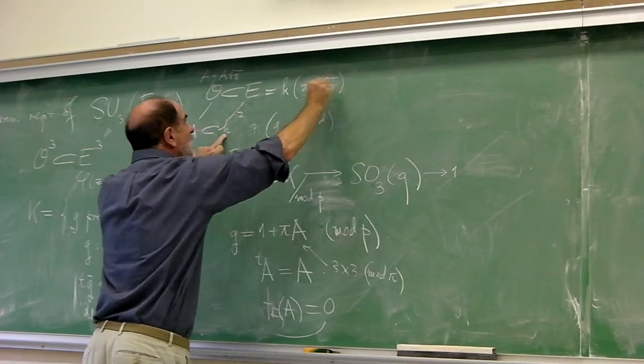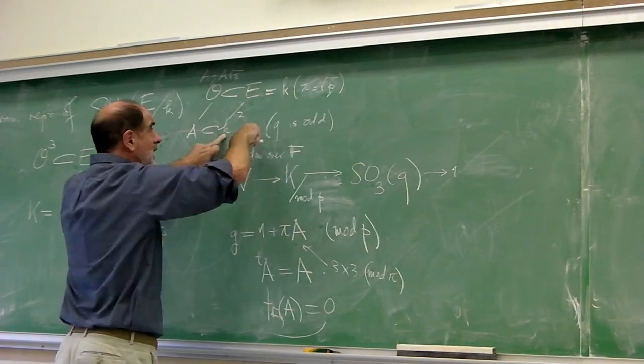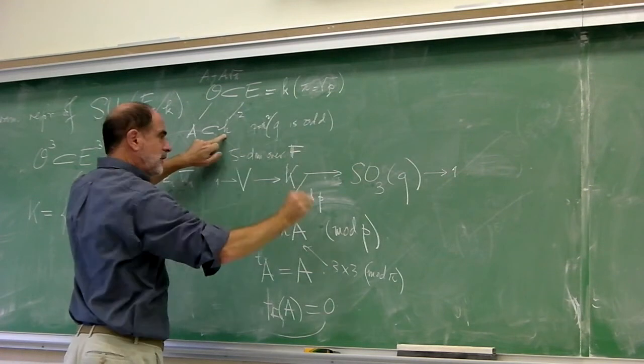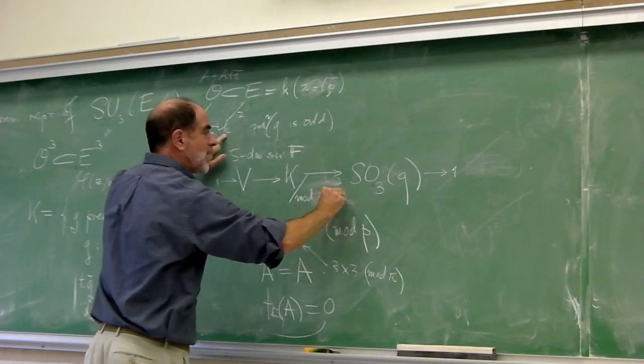So I'm reducing initially, you see, I can initially reduce modulo the square root of P. And then I can reduce mod P, which is pi squared. So this is mod P, which is pi squared. Here's the reduction mod pi.